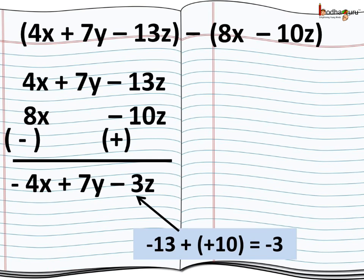The next terms which we need to add are minus 13z plus 10z. Now, here the sign would be minus as 13 is greater than 10. 13 minus 10 is equal to 3. Thus, we get another term minus 3z. Thus, the answer is minus 4x plus 7y minus 3z.